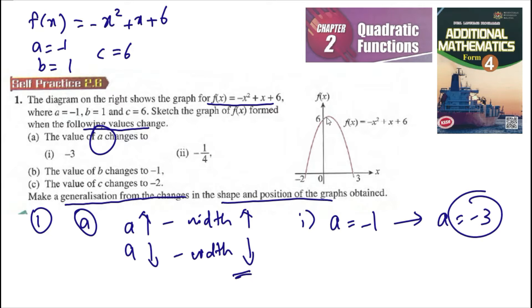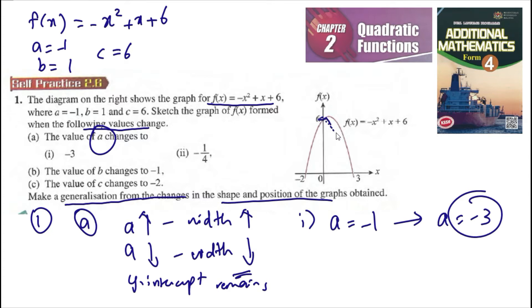When the width decreases, the y-intercept remains the same. So the y-intercept is still the same — just the shape changes, something like this. You can see it is decreased.